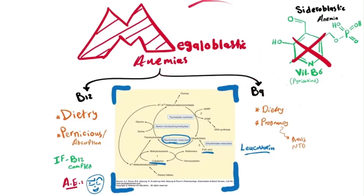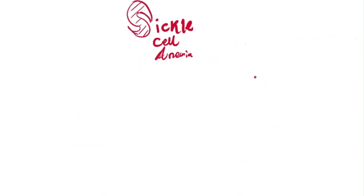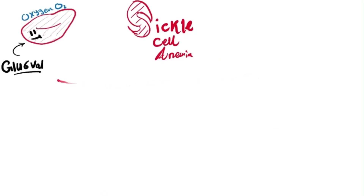In megaloblastic anemia, the presentation shows big red blood cells. In sideroblastic anemia, cells usually have ring inclusions inside, because they cannot proceed with heme production — B6 is really important in the first step of heme production. Now, the last disease I'm going to talk about is sickle cell anemia. You know that sickle cell anemia is caused by a mutation where glutamate at the sixth position is transformed into valine amino acid.